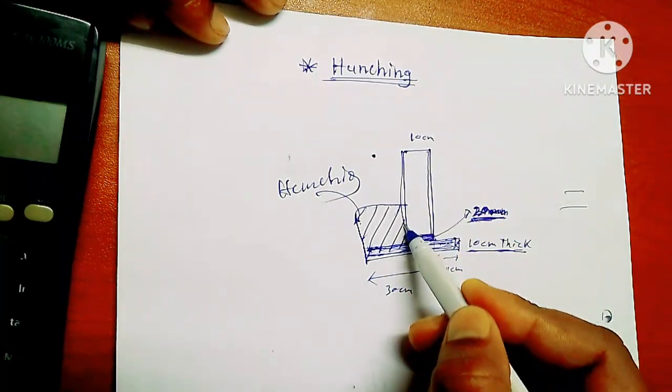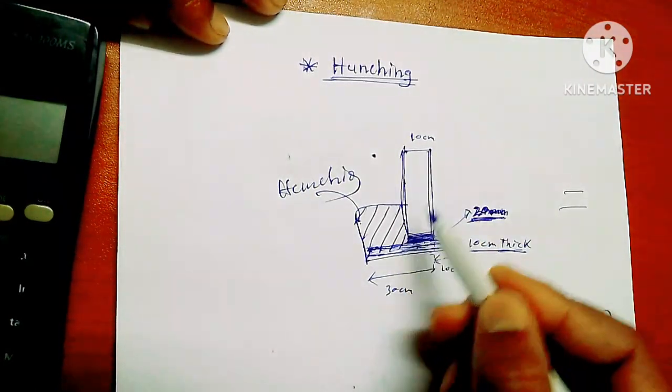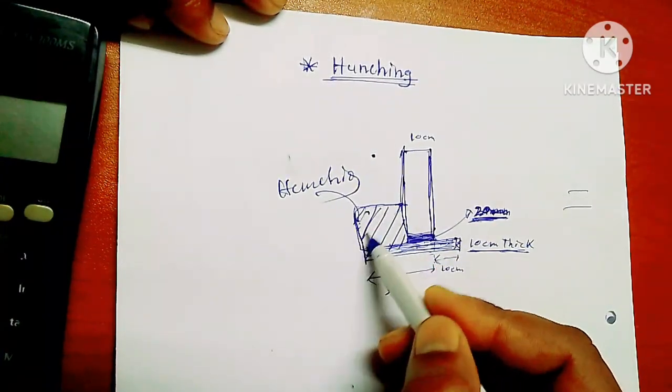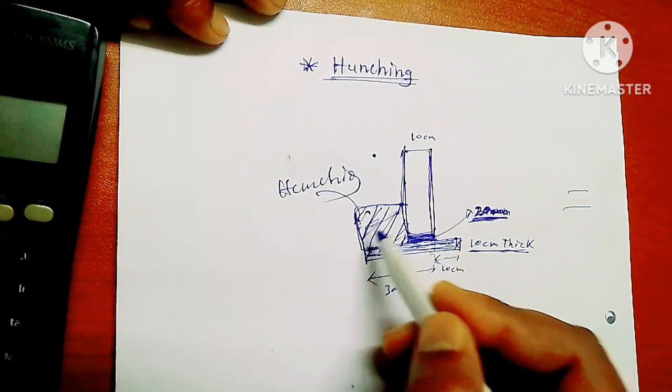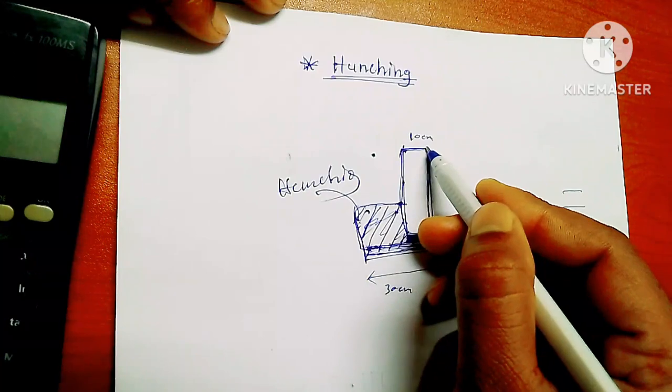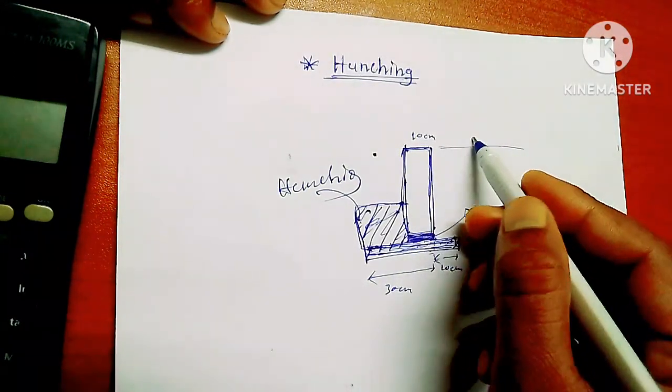And after this we will fix the curb stone. Just after we fix the curb stone, then for side support we do hunching with concrete. This is what we call hunching.